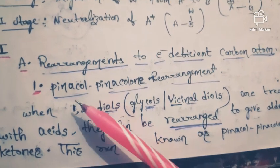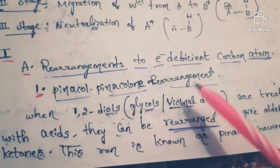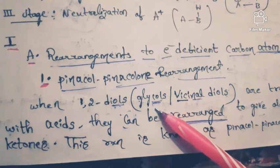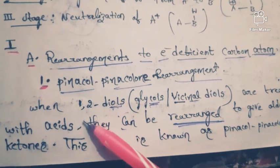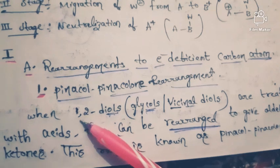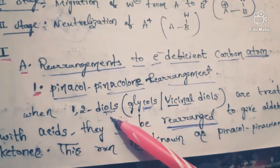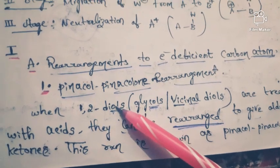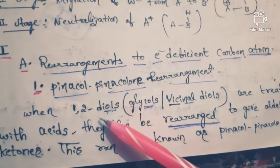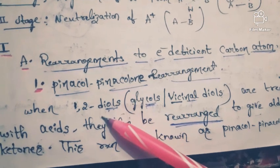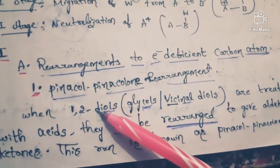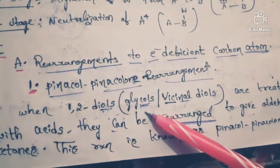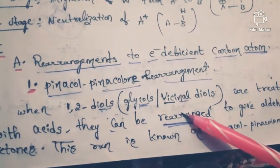The first topic is the pinacol-pinacolone rearrangement. This is very important, even for competitive exams. When 1,2-diols — we know that 'ol' means OH groups — if two OH groups are present at the first and second positions, those are called 1,2-diols or glycols or vicinal diols. Vicinal diols means the OH groups are attached to adjacent carbons, at the first and second carbons.